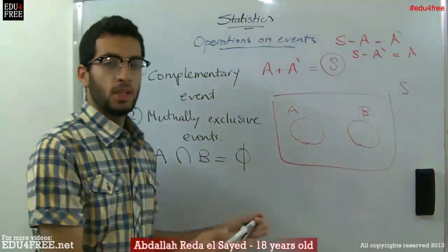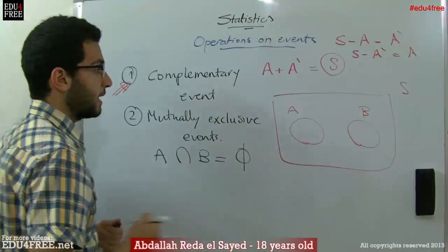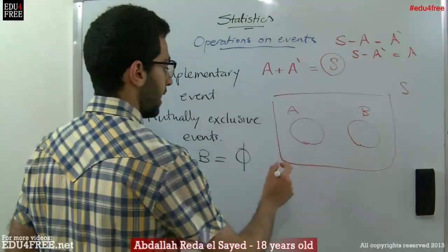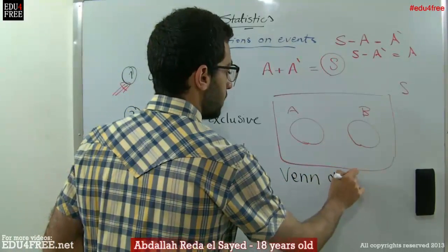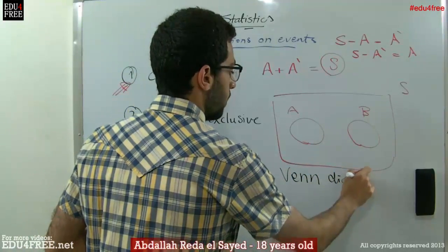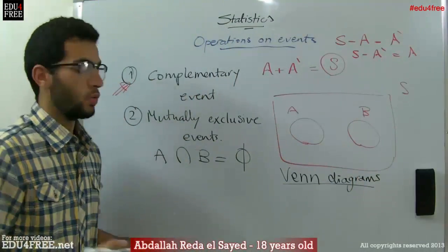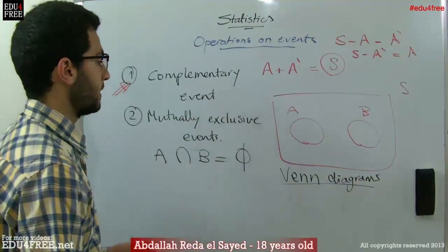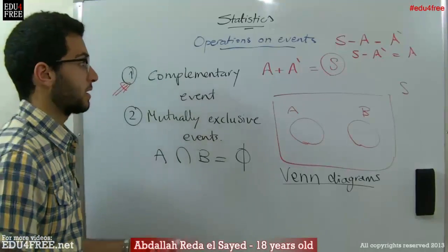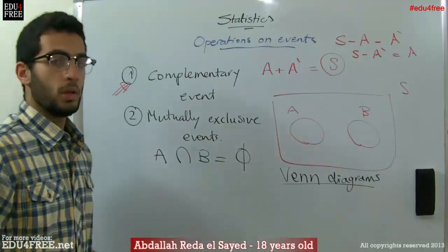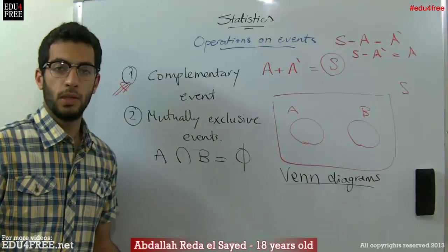All of the explanations and drawings that we are doing here are called Venn diagrams. These are used to facilitate explaining the relations between events in statistics. That was our lesson today. Hope it was clear and see you next time.